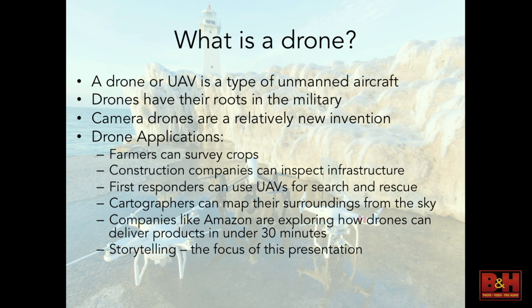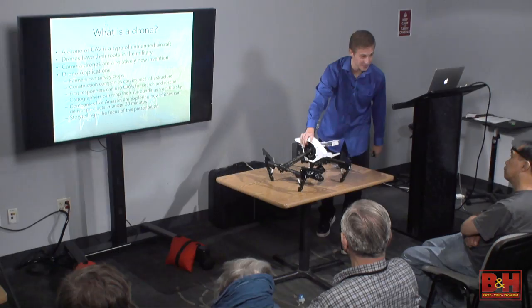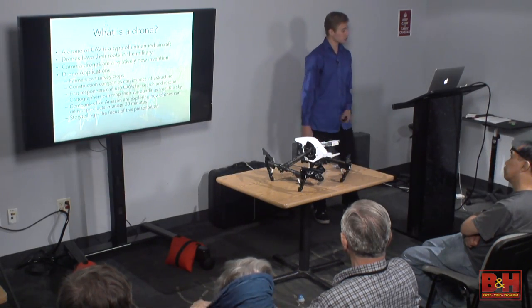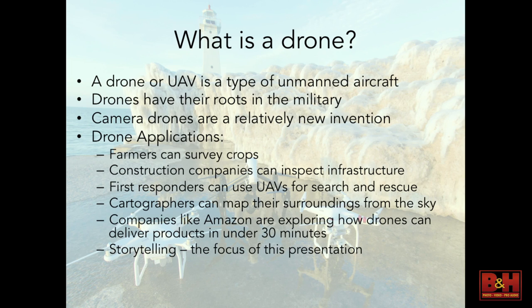Let's delve into the meat of this entire lecture, which is: what is a drone? A drone, or UAV — an unmanned aerial vehicle — is a type of unmanned aircraft. This has been a drone sitting here the entire time; we'll get into this specific drone a little bit later. Drones have their roots in the military — different governments use drones for combat aerial operations so they don't jeopardize their security personnel.